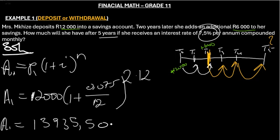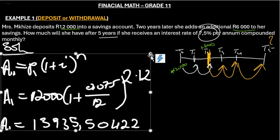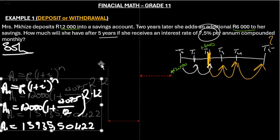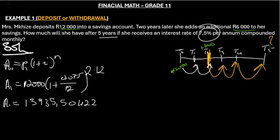Then now we get 13,935.50422. This money is approximately, A1 is approximately R13,935.50.